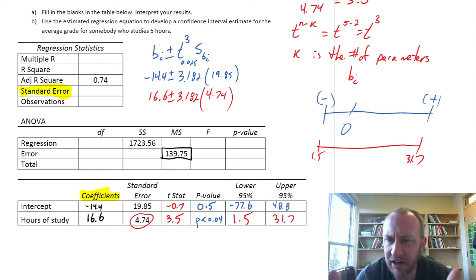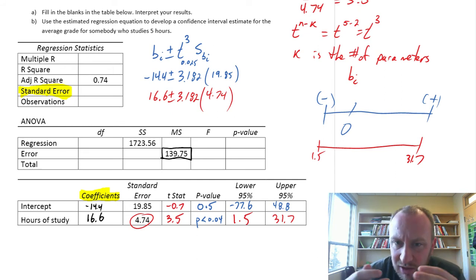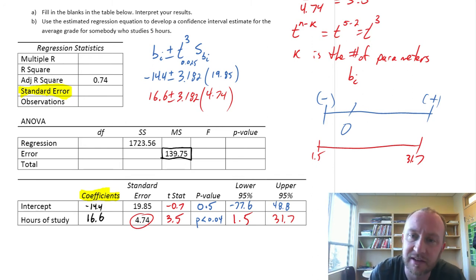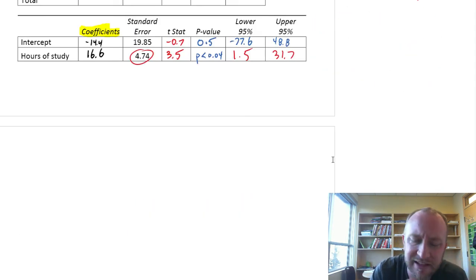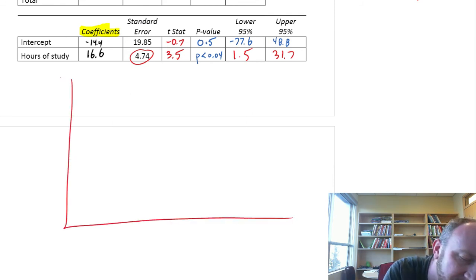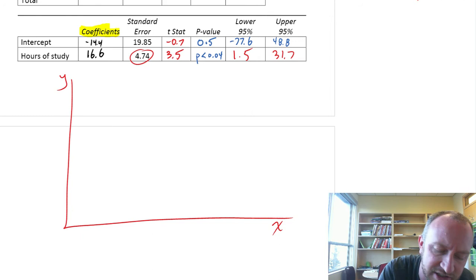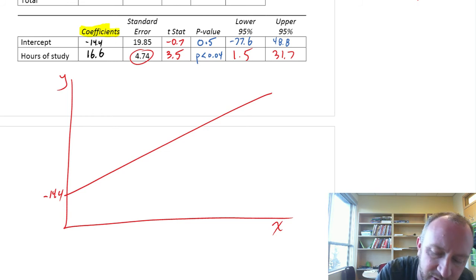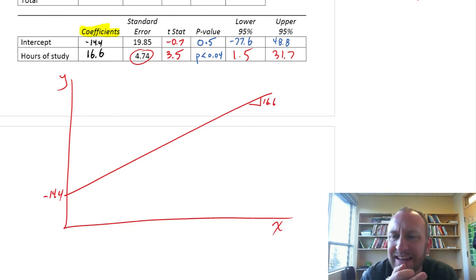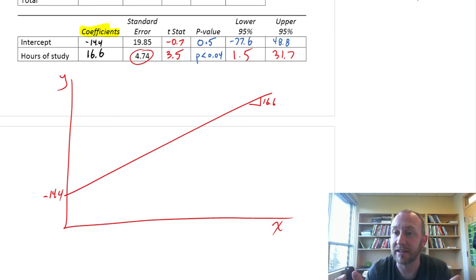That's it for hypothesis testing and interval estimates. I want to draw your attention to one important implication of this uncertainty in these confidence interval estimates — especially for the slope. When we estimate a regression, what we have is a point estimate: a line with a y-intercept of -14.4 and a slope of 16.6. But we've just demonstrated there's a great deal of uncertainty in this point estimate.